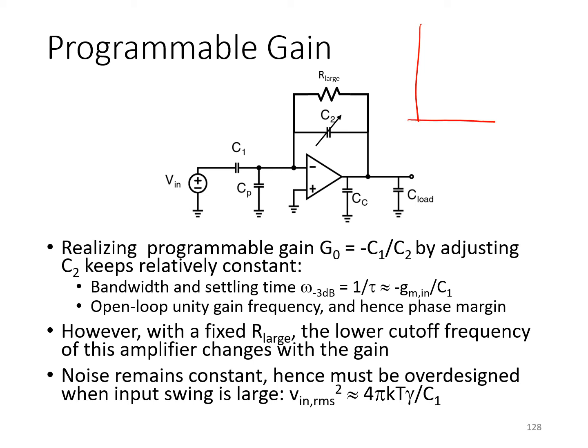If you think about the closed-loop response of the circuit, it's got this lower cutoff frequency, 1 over R_large C2, and it's got a mid-band gain of C1 over C2. So, as you increase C2, you drop the mid-band gain and you lower the cutoff frequency.